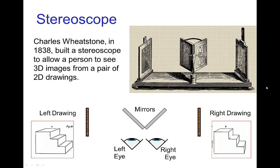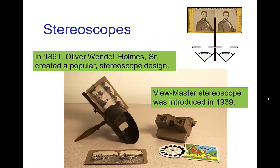The first stereoscope that allowed us to see 3D images from 2D drawings was built in 1838 by Charles Wheatstone. It had a rather complicated form using a pair of mirrors to project different images to the left and right eye. A much simpler system was invented in 1861 and became quite popular because photography was developed around that time, making it easy to use a pair of cameras to create stereoscopic images. Later, the Viewmaster stereoscope uses essentially the same principle in a different design.